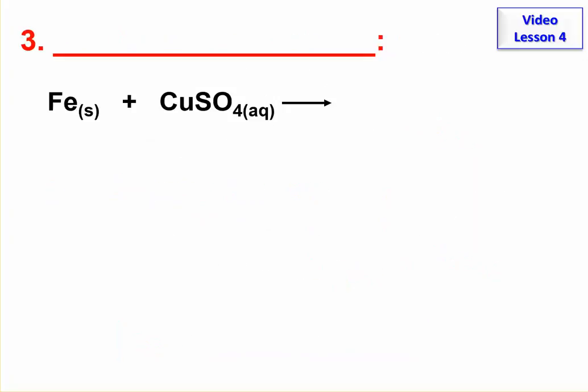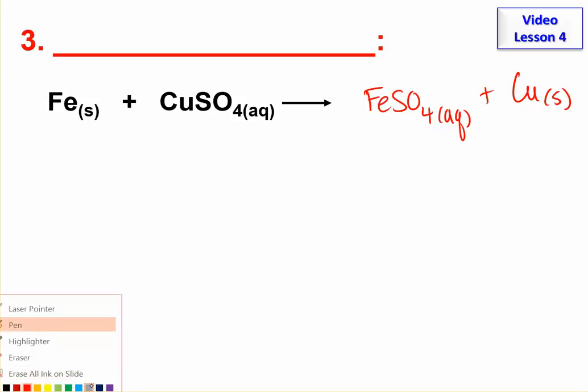This next one involves something replacing something. So let's look at the products. Can you tell what is replacing what? The iron is replacing the copper in the compound.